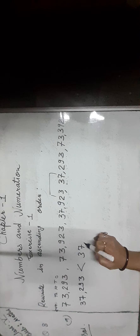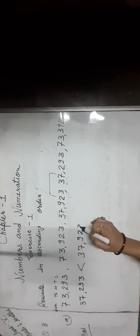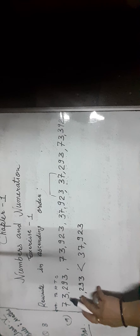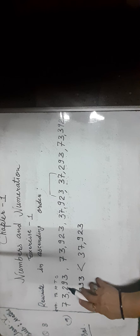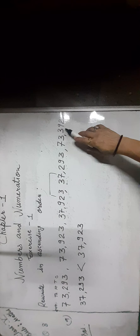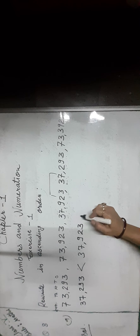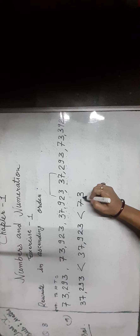Then we write 37,923. Now compare the remaining numbers. As you can see, the thousands place digits are 3, 3, and 3 — these are same. So we move to the next place, hundreds place. Hundreds place digits are 2, 9, and 3. Two is smaller than 9 and 3, so we write 73,293 next.